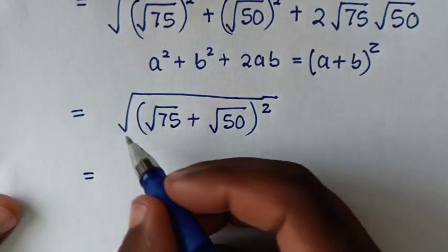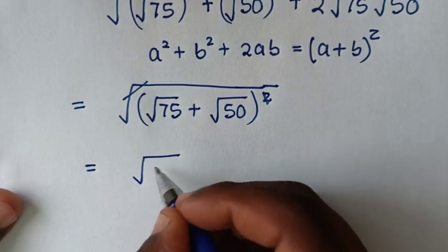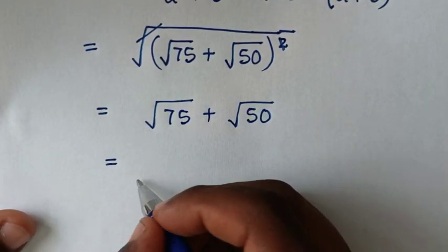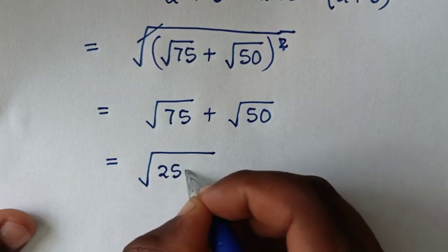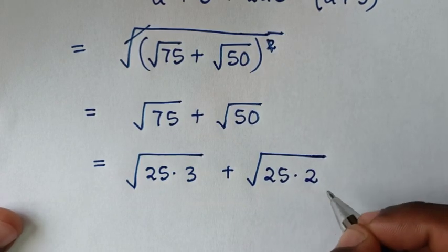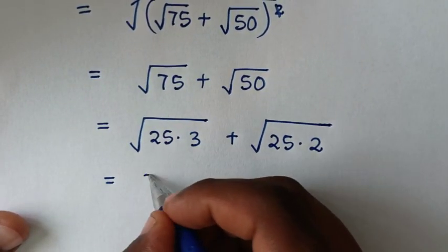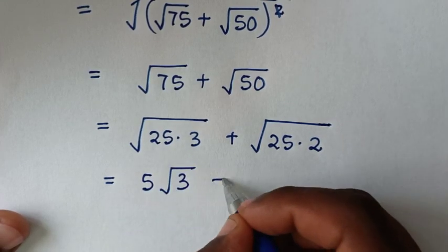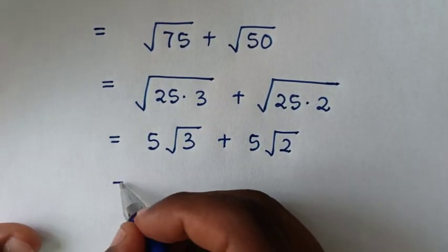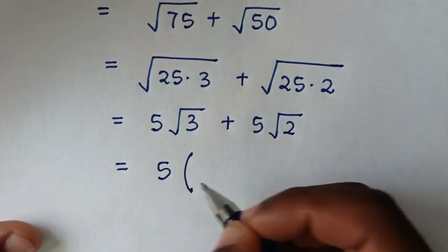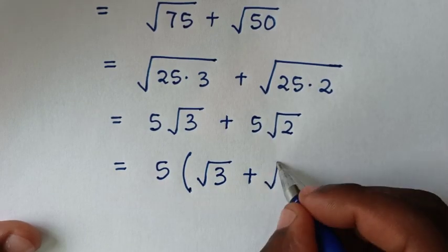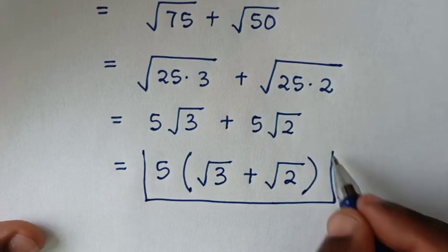The square root and the square cancel, leaving square root of 75 plus square root of 50. Now, 75 equals 25 times 3 and 50 equals 25 times 2, so square root of 75 equals 5 square root of 3, and square root of 50 equals 5 square root of 2. Since 5 is common, we factor it out to get 5 times (square root of 3 plus square root of 2). This is the simplified form of our problem.